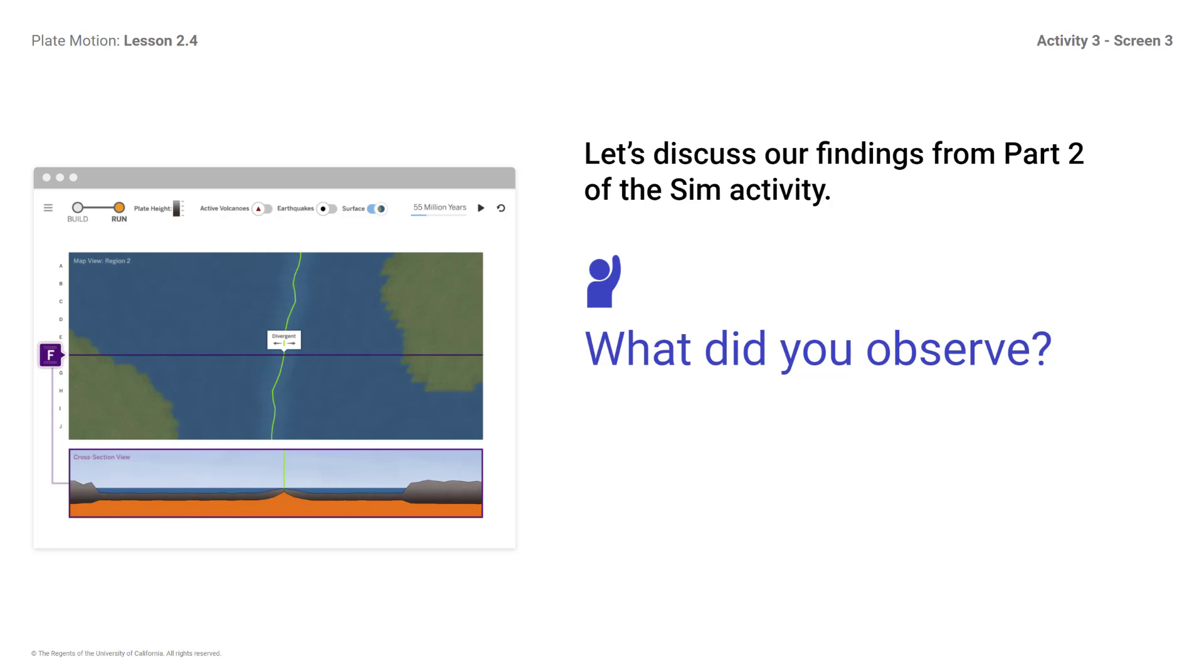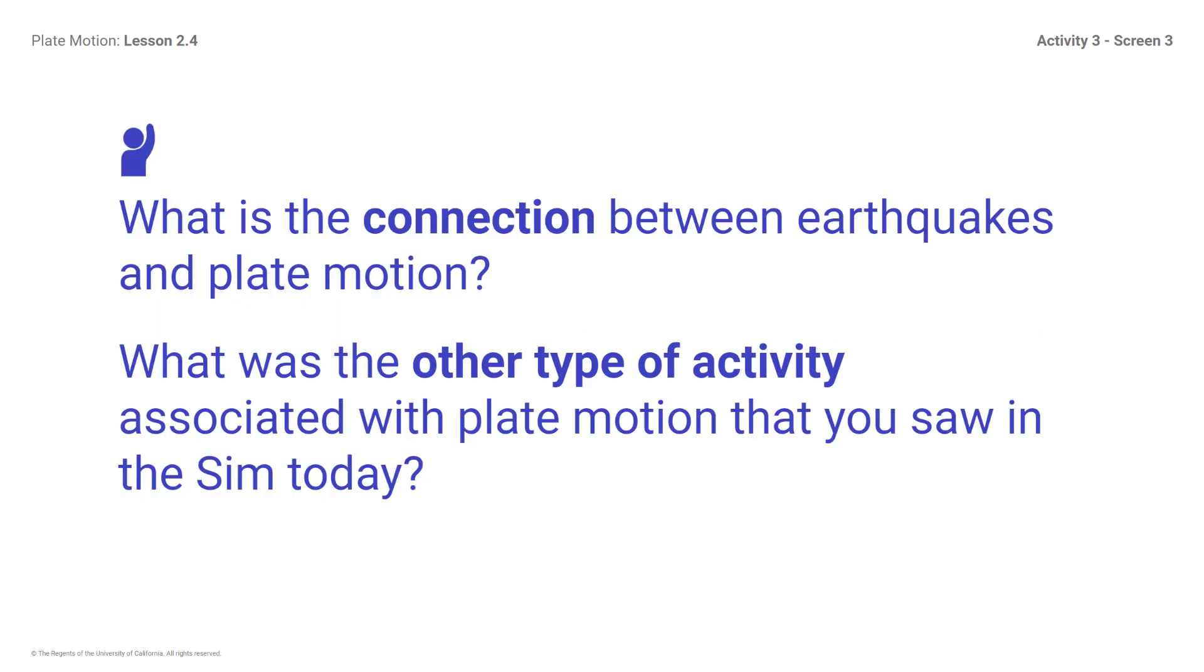You may have seen different types of activity at plate boundaries. In Chapter 1 of this unit, you investigated how plate motion is related to the sudden shaking of the Earth's surface. What is this shaking called? An earthquake. What is the connection between earthquakes and plate motion? What was the other type of activity associated with plate motion that you saw on the Sim today?